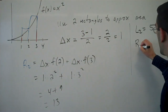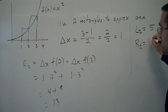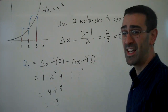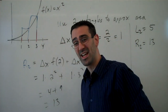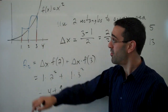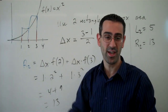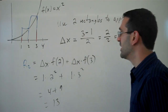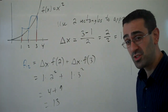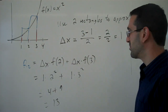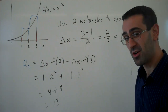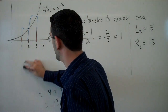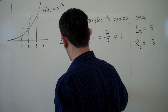My right endpoint approximation with two subdivisions is 13. And as we can see, that's going to be an overestimate because we've got lots of extra area there. So those are the most common two rectangular approximations to the area under the curve, but they're not the only ones.